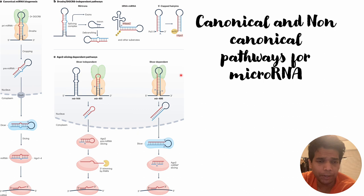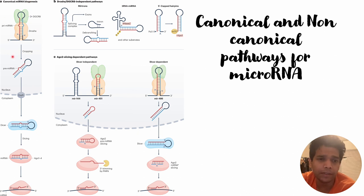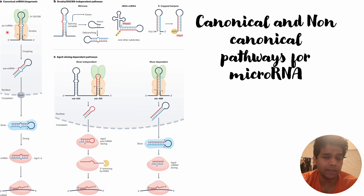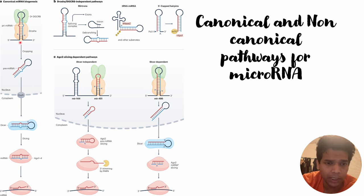We will start with the canonical pathway, whose pictorial representation is shown on the left-hand side. Initially, the pre-micro RNA is transcribed within the nucleus, just like a normal protein, as shown here.